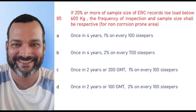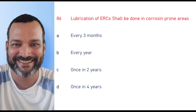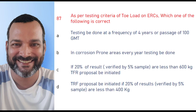If 20% or more of sample size of ERC records a load below 60 kg, the frequency of inspection and sample size shall be respectively for non-corrosion prone areas: the right answer is once in 2 years or 100 GMT, and 2% on every 100 sleepers. Lubrication of ERC shall be done in corrosion prone areas every year. As per testing criteria of toe load of ERCs, which one of the following is correct?